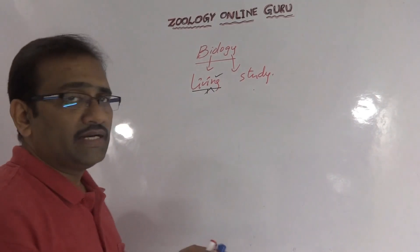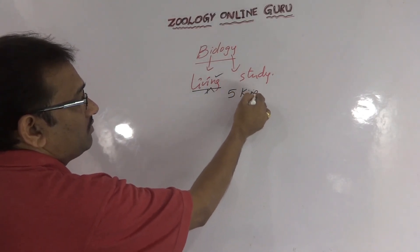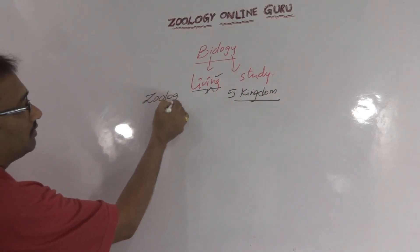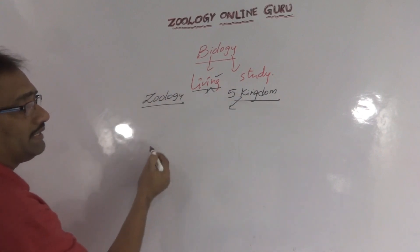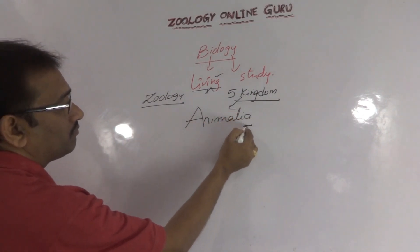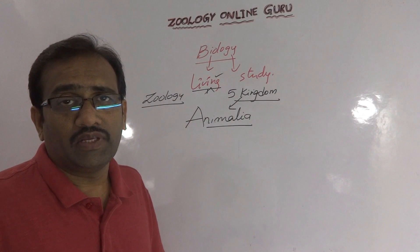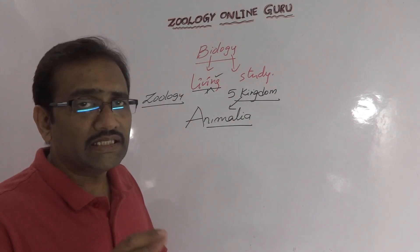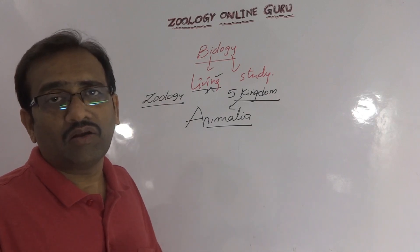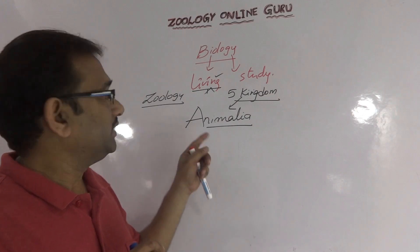Taking the five kingdom classification, our zoology is included in one of the kingdoms, that is called Animalia. Animalia is one of the kingdoms in Whittaker's classification. Our study is purely based on the Animalia kingdom for MSc entrance purposes in the Telangana universities. Specially and exclusively, I am giving intensive coaching here about Animalia.